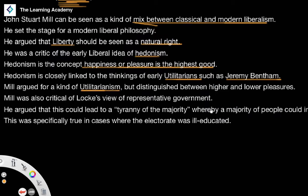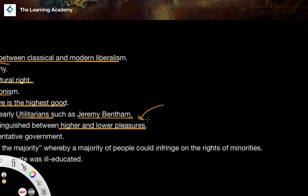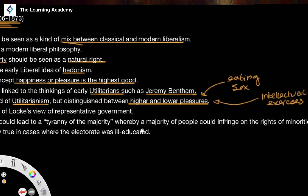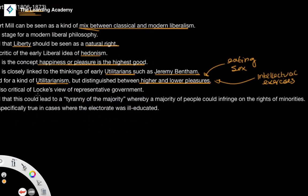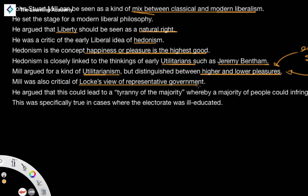Mill distinguished between different kinds of pleasures: higher pleasures and lower pleasures. Lower pleasures are more animalistic things — eating, sex, drinking. Higher pleasures are intellectual exercises: reading, philosophising, practising mathematics. Mill argued that the higher intellectual pleasures were more valuable than the animalistic lower pleasures. He was also a critic of Locke's view of representative government.